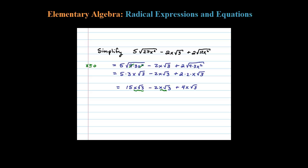15 minus 2 is 12... I'm sorry, not today - 15 minus 2 is 13. 15x square root of 3 minus 2x square root of 3 plus 4x square root of 3, and then 13 plus 4 is 17. So 17x square root of 3 is my final answer.